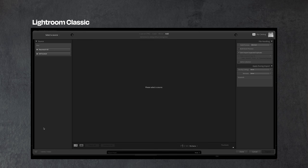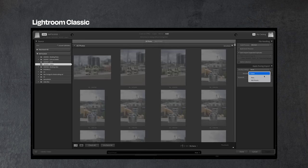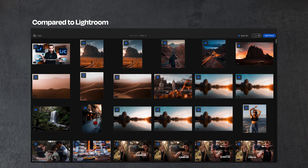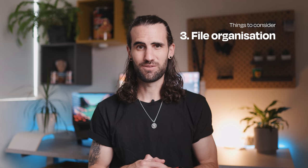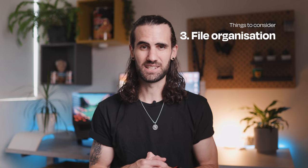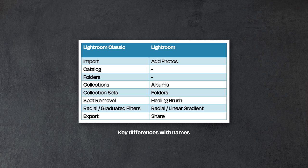The next big difference is file organization and importing. Lightroom Classic gives you a lot more options when importing — applying metadata presets and various other things you can't really do in Lightroom. There are also naming differences between the two apps which can be a bit confusing. In Lightroom Classic you use catalogs as your entire library, and adding photos is called importing. In Lightroom it's just called 'Add Photos.' Lightroom Classic also uses collections, collection sets, and smart collections.